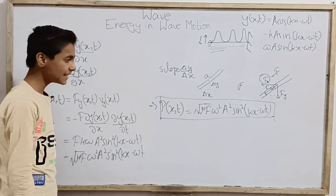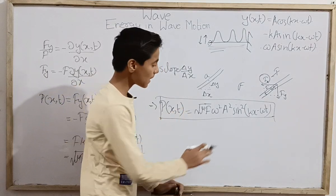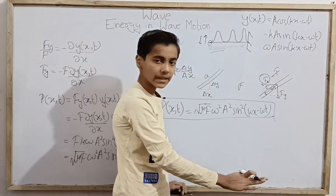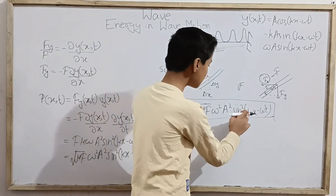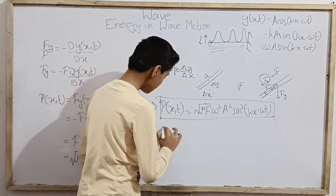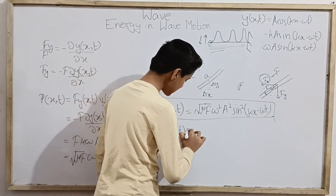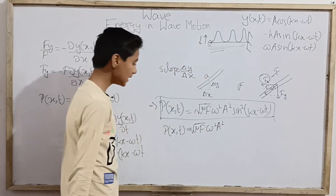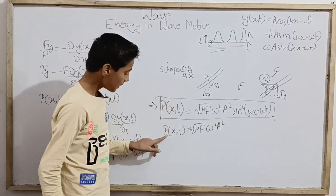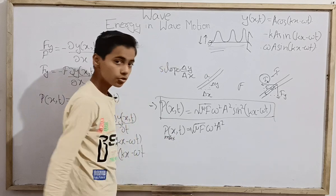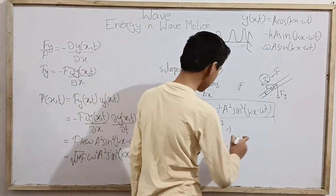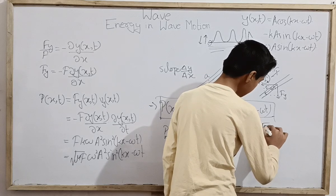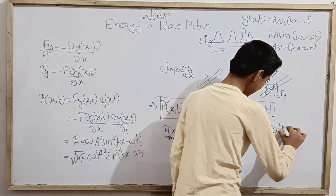Now, average power. The terms outside the sine squared are all constants. Since sin²(kx − ωt) is a sine squared function, its maximum value is 1. So the maximum instantaneous power is √(μF) × ω² × A². The average value of a sine squared function is one half of its maximum, so the average power equals half of √(μF) times ω² times A².